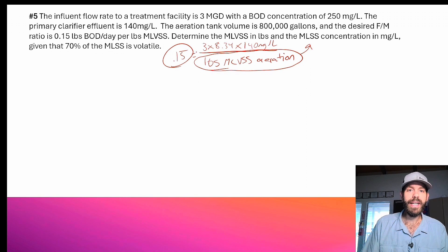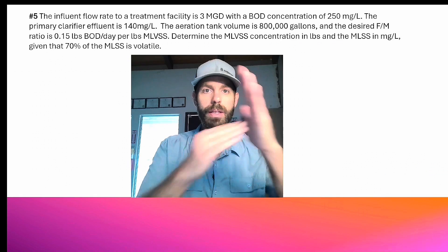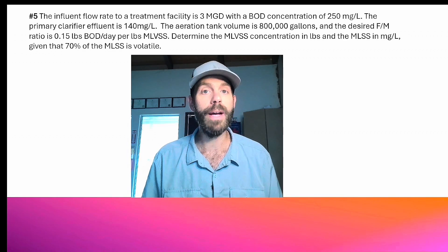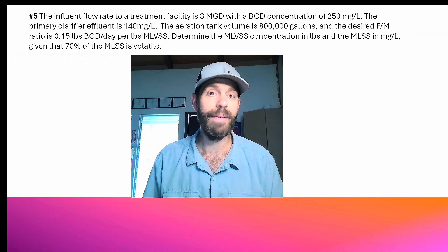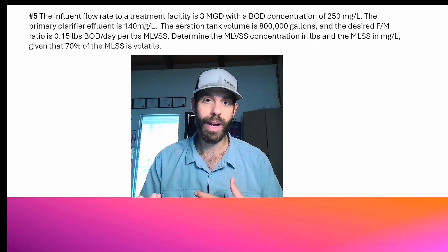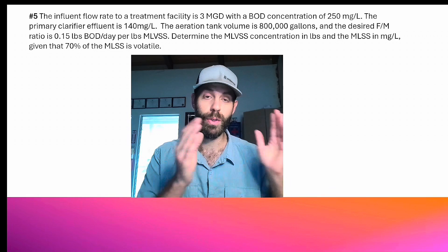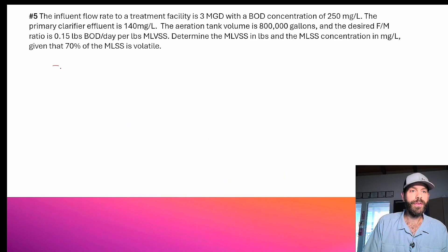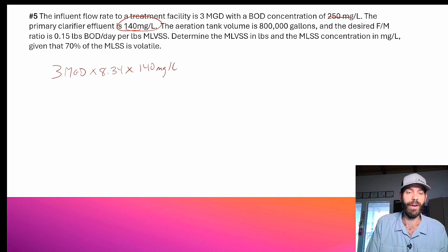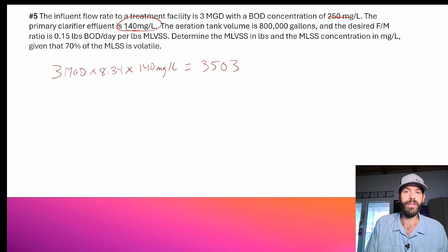The first step is to figure out the pounds BOD per day. If you don't know what the pounds formula is, you need to pause the video — an info card should have just popped up in the upper corner of your screen. Go learn the pounds formula. The calculation is 3 MGD times 8.34 pounds per gallon of water times 140 milligrams per liter. Why 140 and not 250? Because this is the primary clarifier effluent — this is what's going into aeration. If I work that out, it comes out to 3,503 pounds of BOD per day.